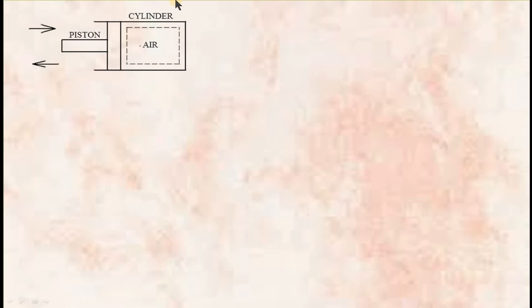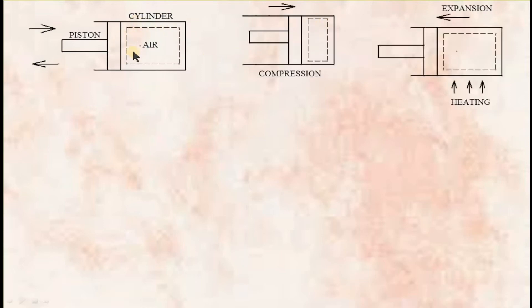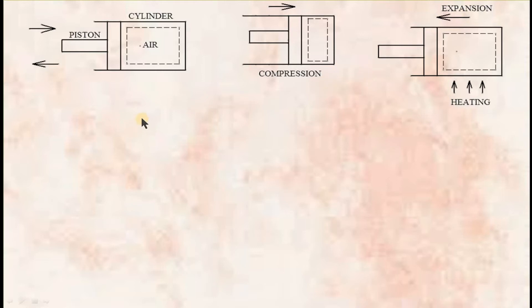Now, I will analyze the question. There is a piston cylinder completely filled with air. The movement of piston is to and fro. When the piston is moved towards right, the air gets compressed. When the piston is moved towards left, the air gets expanded. This process is repeated continuously, therefore the process carried out on air is cyclic.